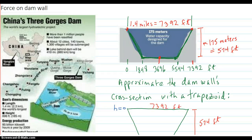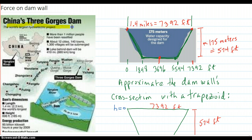Here's a problem about the force of water on a dam. So I went on the internet and figured out China's Three Gorges Dam, and it's very large. It's 7,392 feet across and the water depth is 574 feet from top to bottom, and it roughly is in the shape of a trapezoid.